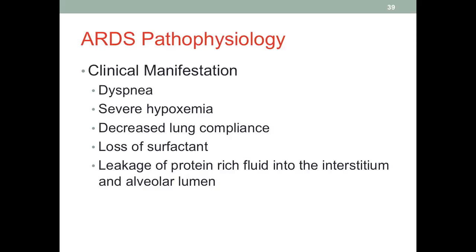Major symptoms include breathing difficulty, severe low oxygen in the blood, and loss of surfactant — the chemical that keeps the alveoli inflated. With decreased surfactant, we keep losing vital air volume because once these air sacs close, they can no longer take in air. We can also see protein-rich fluid leaking into the interstitium and alveolar lumen, taking up volume meant for air. All of this contributes to less lung capacity available for normal breathing.